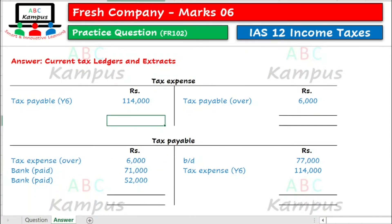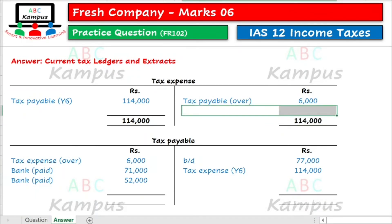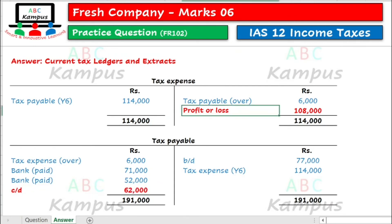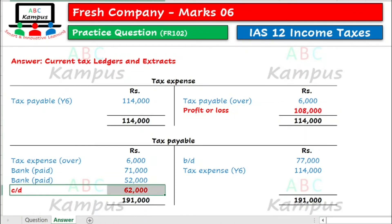Hum tax expense ka agar total karte hai, to as a balancing figure hummare paas woh amount aa jayegi jo profit or loss me expense banni chahiye gi — 108,000. Isi tariqe se hum tax payable ka total bhi kar lete hai. To carry down balance hummare paas aa jayega 62,000. To profit or loss me jo humara expense hai woh 108,000 ka show hona chahiye, aur tax payable jo hai humara 62,000 ka statement of financial position me current liability ke andar reflect hona chahiye.